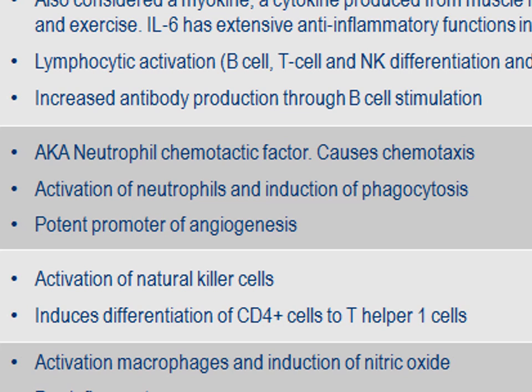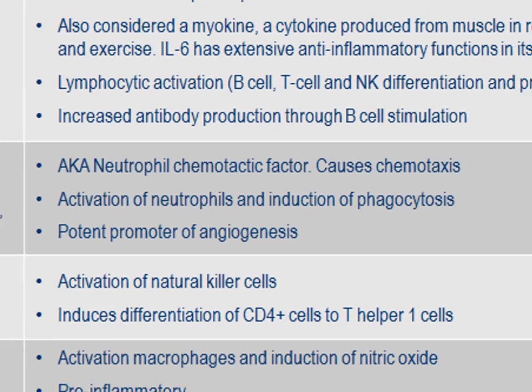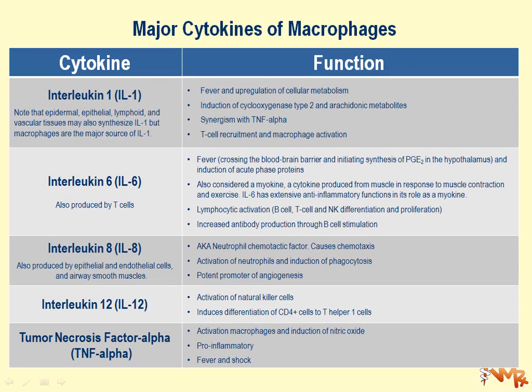Interleukin-8 activates neutrophils and induces phagocytosis in them. It is also a potent promoter of angiogenesis, causing local angiogenesis — formation of more blood vessels — and as a result, delivery of more blood and more innate cells to the site of infection or injury by pathogens.